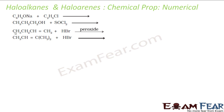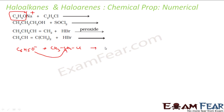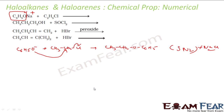Now: C6H5ONa reacting with C2H5Cl (ethyl chloride). C6H5ONa is sodium phenoxide — O−Na+. The phenoxide ion (O−) is a good nucleophile but not a strong base, so it goes for substitution. It kicks out the chlorine from ethyl chloride, forming CH3CH2−O−C6H5 (phenetole) and NaCl. This is an SN2 reaction and is used for ether synthesis — this is the Williamson ether synthesis.